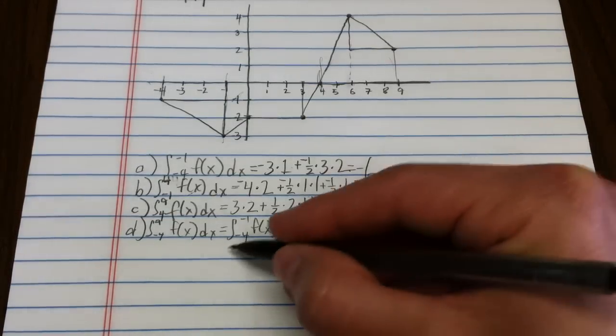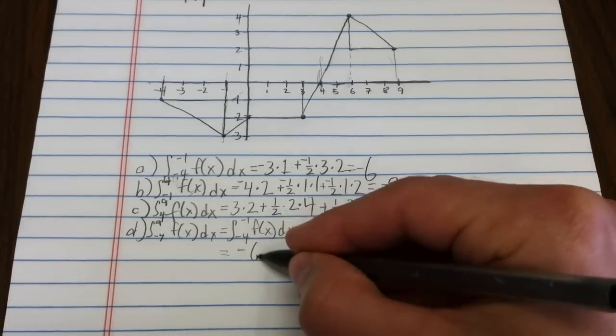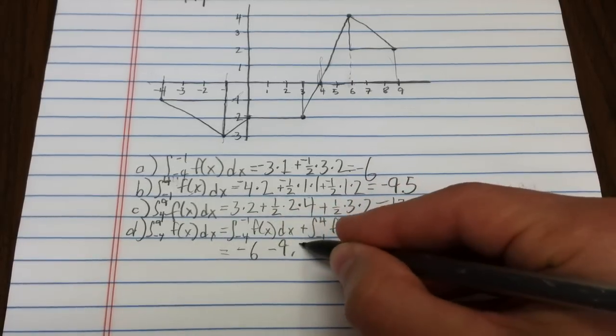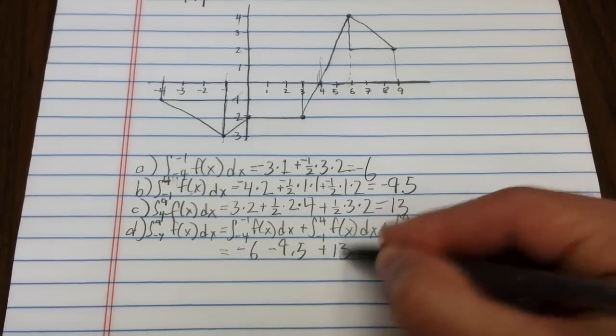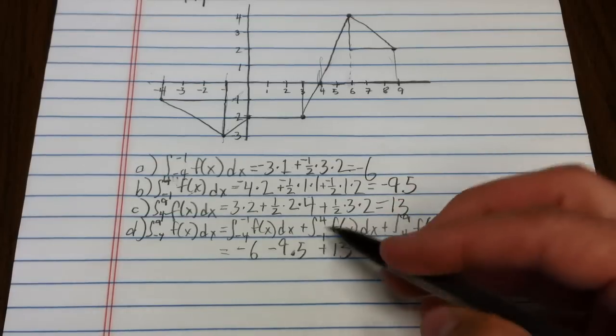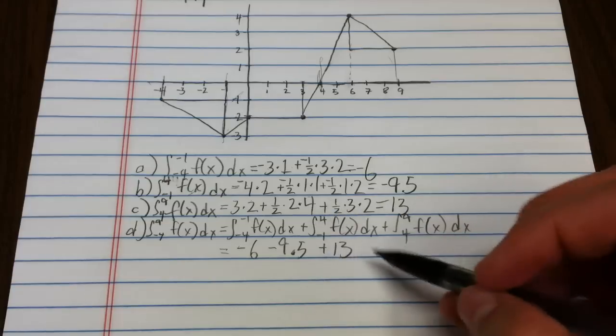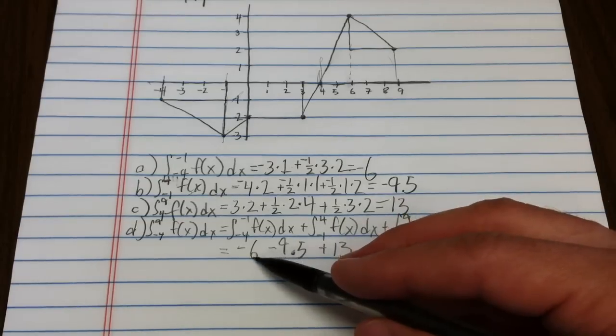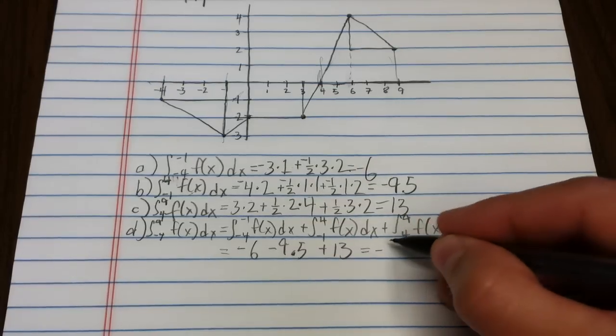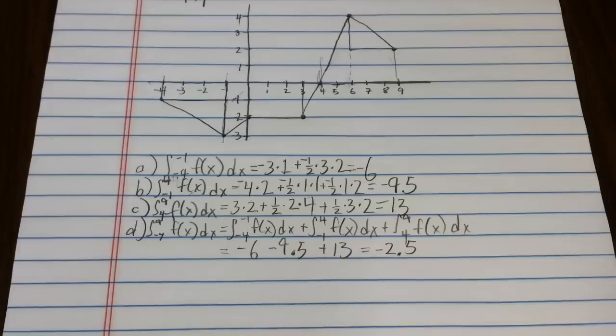So what's that give us? That gives us negative 6, negative 9.5, plus 13. So 13 minus 9.5 is 3.5. 3.5 minus 6 gives me negative 2.5. There we go.